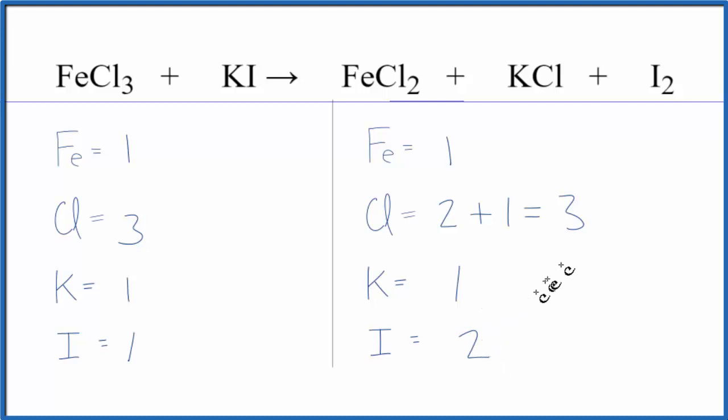It looks like really the only thing we need to balance right now is this iodine here. So let's put a two in front of the KI. So now we have two times the one iodine, we have two iodine atoms.